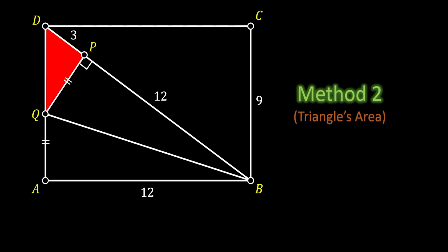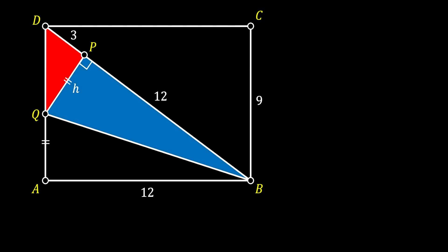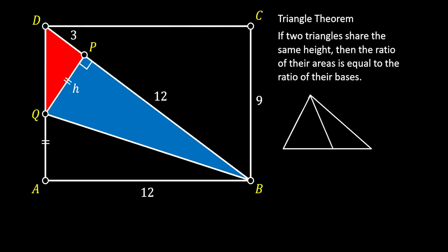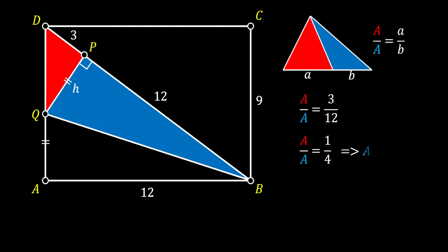Now let's do method number 2, which uses triangle area. We start by labeling the height of the red triangle PQ as H. We can notice another right triangle beside it, QPB. Those two triangles share the same height H. We can use the theorem that states: if two triangles share the same height, the ratio of their areas equals the ratio of their bases. The ratio is 3 over 12, so the area of the blue triangle is 4 times the area of the red triangle.